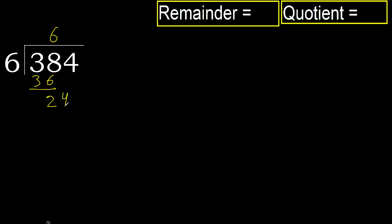Next, bring down 4 to get 24. 6 multiplied by 4 is 24, which is not greater. Subtract: 24 minus 24 equals 0.